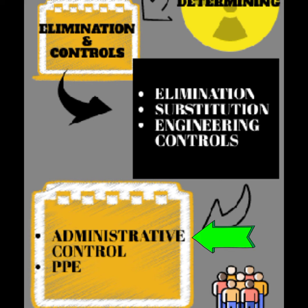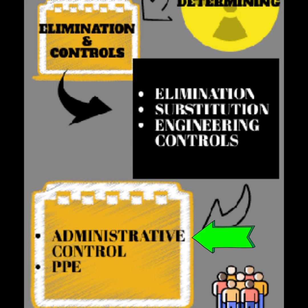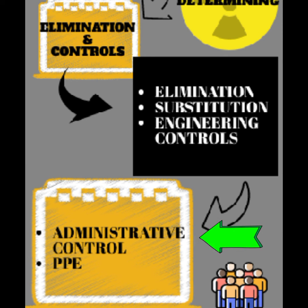Next is administrative controls — controls which alter the way work is performed. They may consist of policies, training, standard operating procedures or guidelines, personal hygiene practices, work scheduling, etc. These controls are meant to minimize exposure to the hazard and should only be used when exposure cannot be completely mitigated through elimination, substitution, or engineering controls.